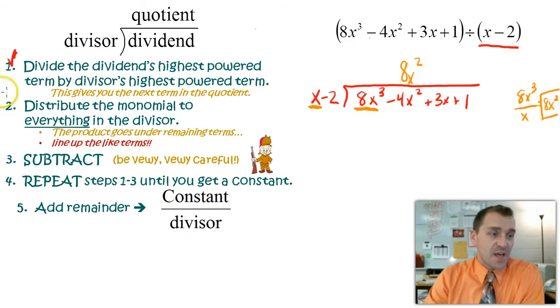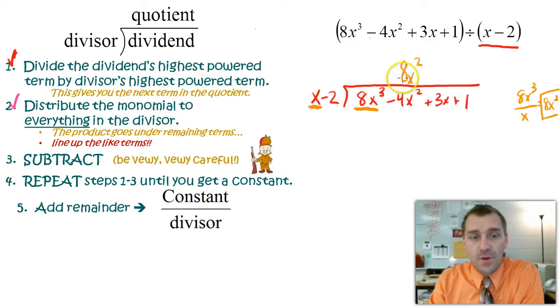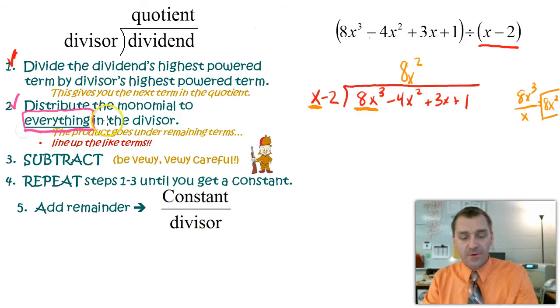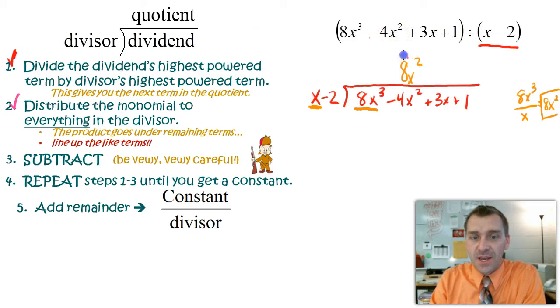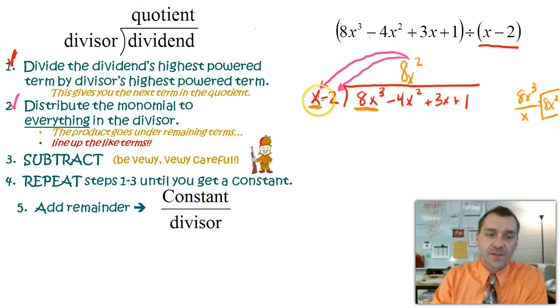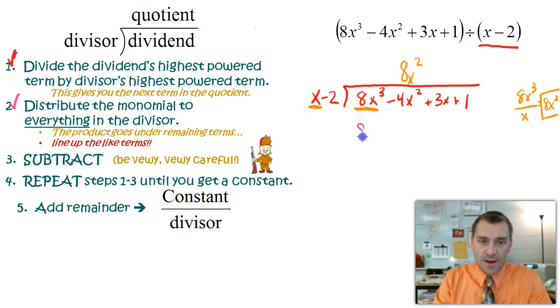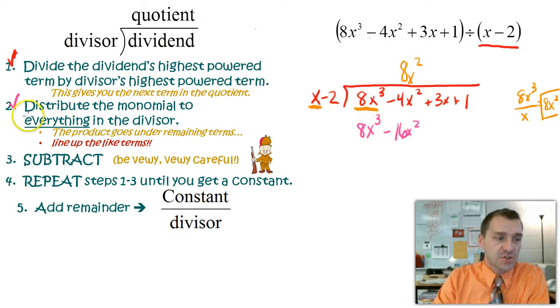So step number two, now I'm going to actually distribute the monomial that I just got here, 8x squared. I'm going to distribute that to everything in the divisor. Everything in the divisor. So I'm taking this 8x squared, I'm actually going to take and multiply it to this, and I'm going to multiply it to this. I'm distributing it to everything. Everything. So 8x squared, when I multiply that to x, that gives me 8x cubed, and notice I'm putting that in my cubed column. And then 8x squared times this guy. Remember, don't forget. Got to make sure you distribute it to that. That gives me negative 16x squared, and I'm keeping it in my actual x squared column. So that's beautiful. So I've just distributed that.